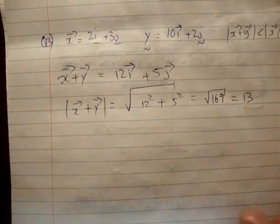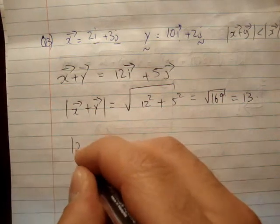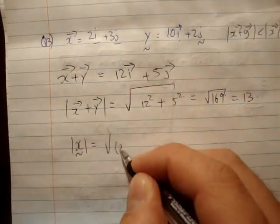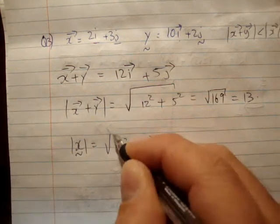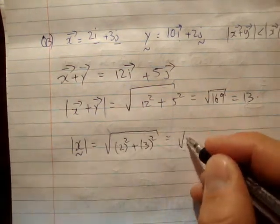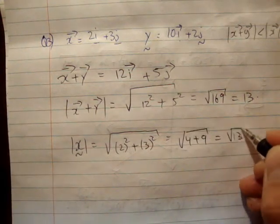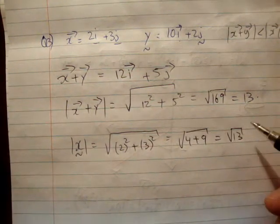That's the magnitude. What's the magnitude of x? The magnitude of x is equal to the square root of 2 squared plus 3 squared, which is the square root of 4 plus 9, equals root 13. Is that right? Yes, it is.